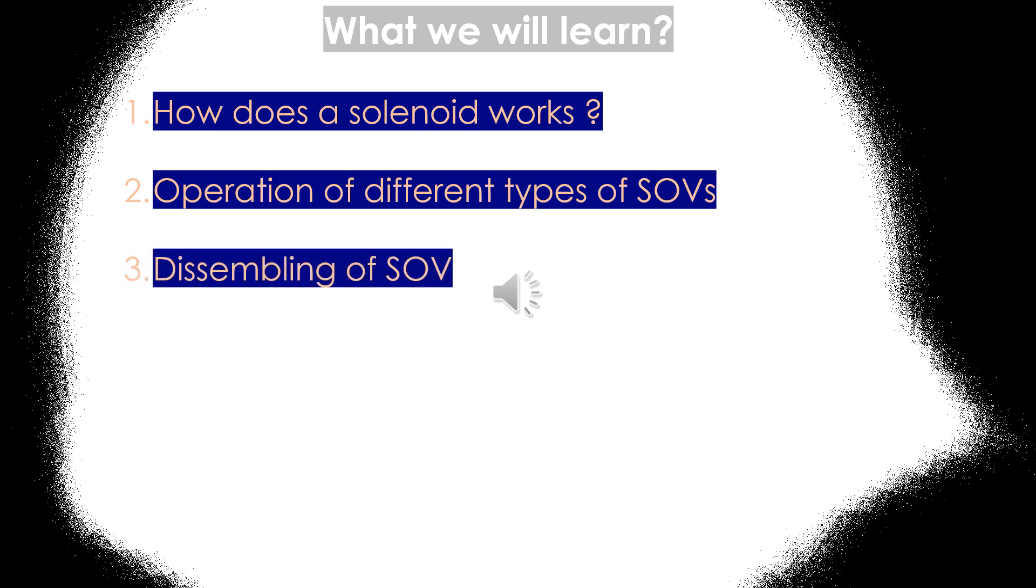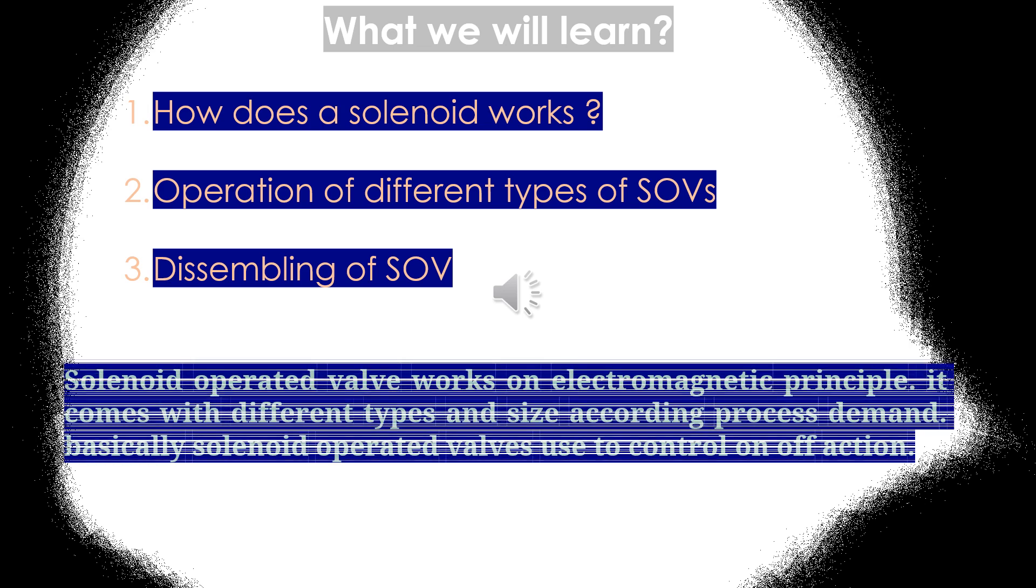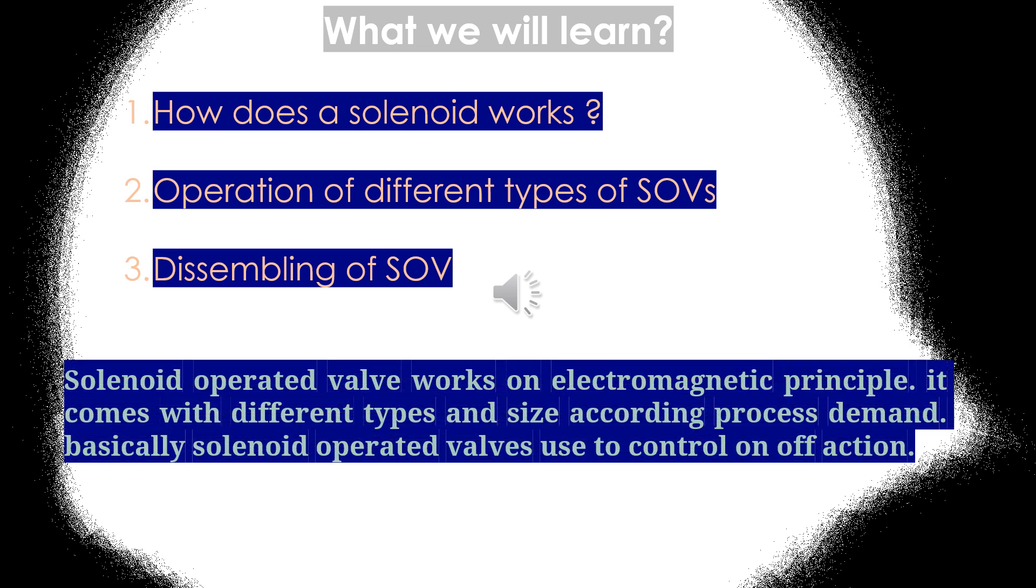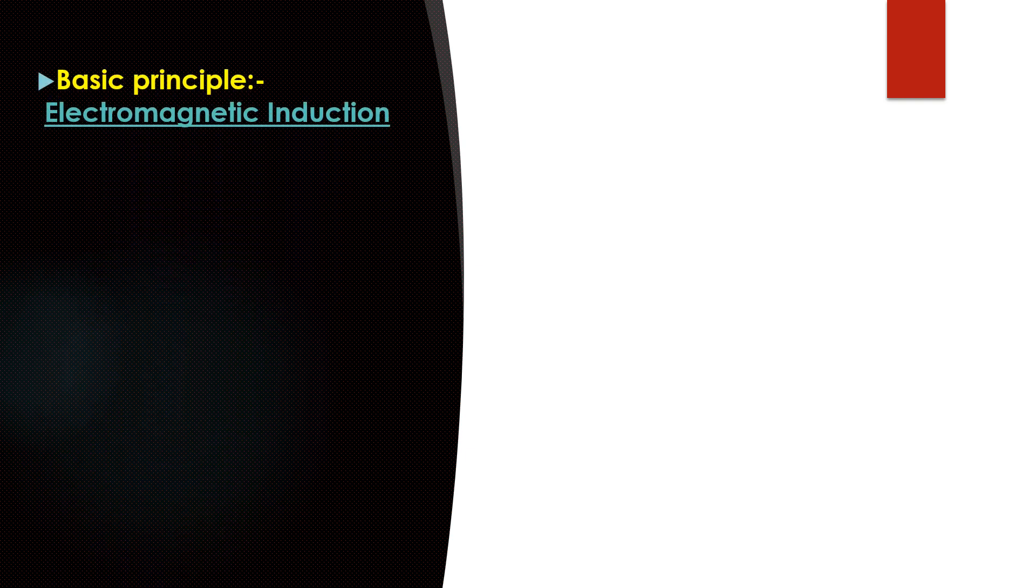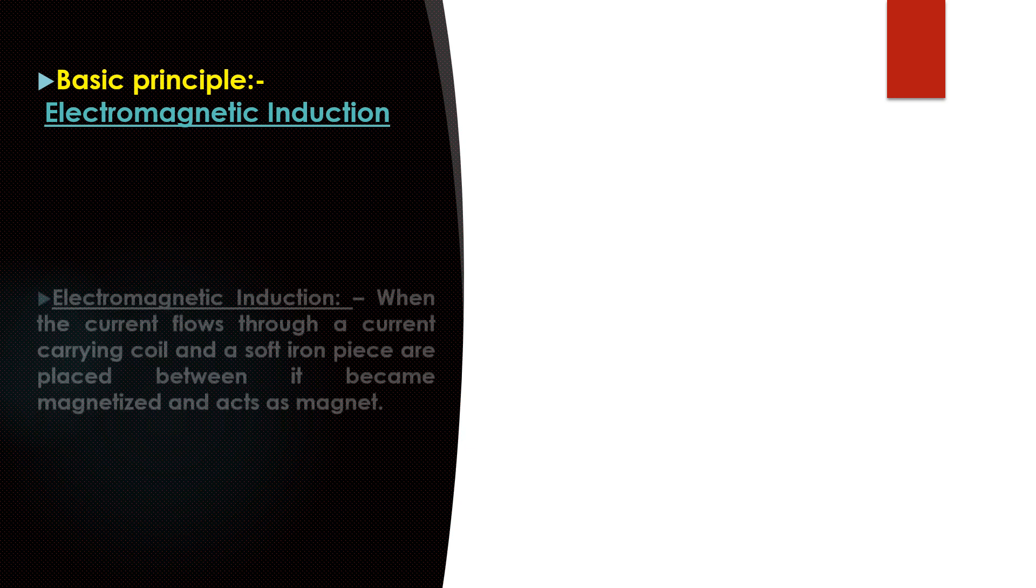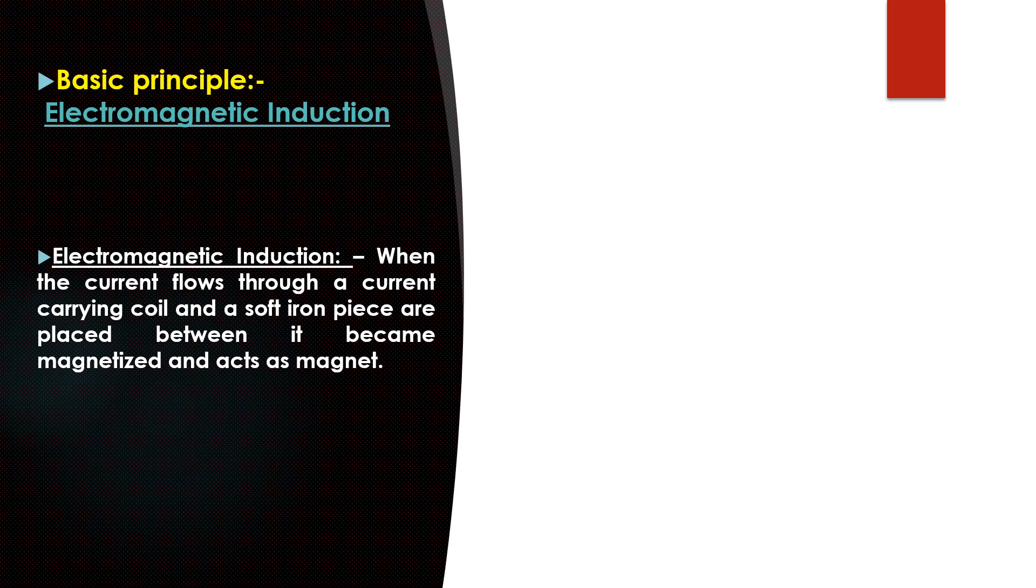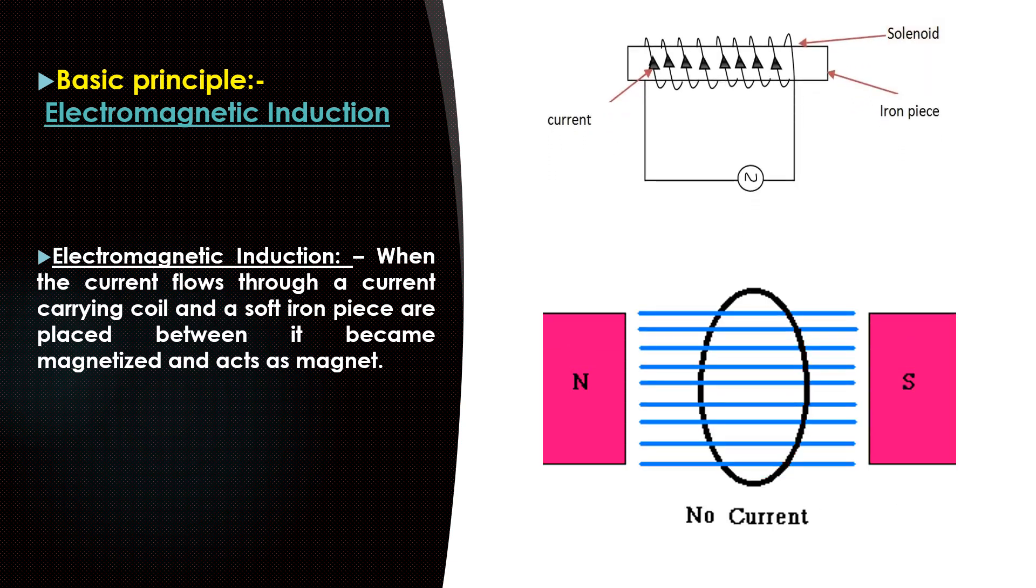Solenoid operated valve works on electromagnetic principle. It comes in different types and sizes according to process demand. Basically solenoid operated valves are used to control on-off action. You already know that solenoid valves are working on electromagnetic induction principle. This is the basic working principle of solenoid valves. What is electromagnetic induction? When current flows through a current-carrying coil and a soft iron piece is placed between it, it becomes magnetized and acts as a magnet. You can see this function of principle in this graphic.